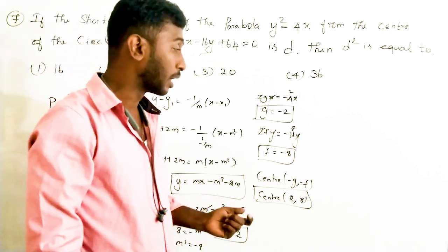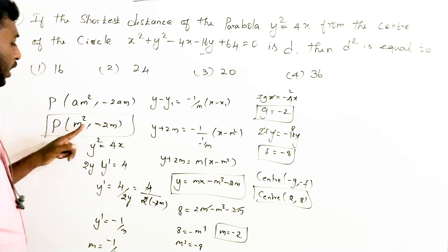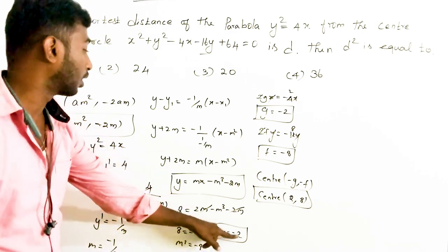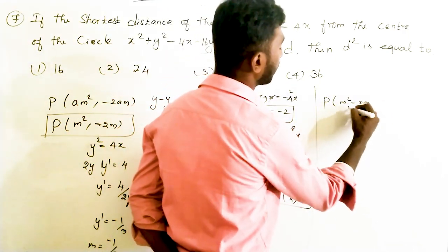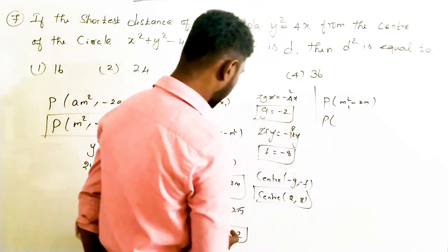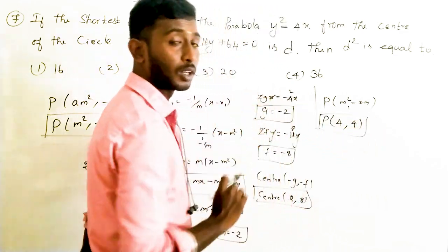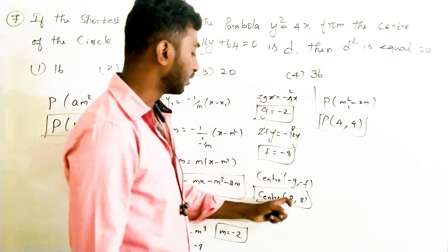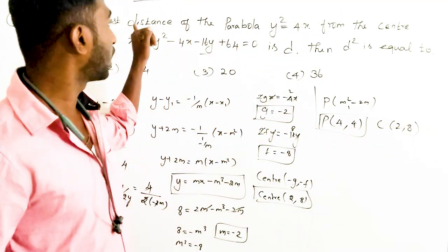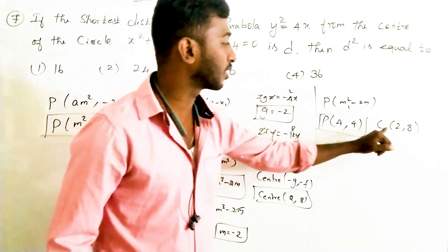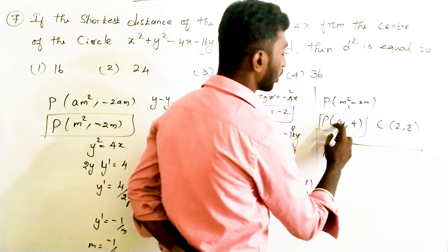Now that m = -2, we substitute back into the parametric point (m², -2m) to find point P on the parabola. With m = -2: m² = 4 and -2m = 4, so the point P is (4, 4).